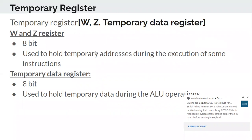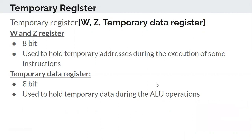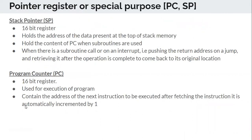Next come the temporary registers W and Z — they are 8-bit registers used to hold intermediate data during operations. Then the stack pointer and program counter: both point to memory addresses. Since memory addresses are 16-bit, these two are 16-bit registers.